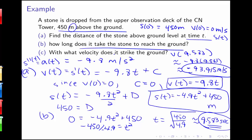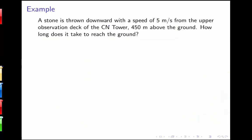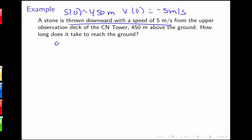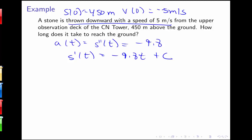When looking at these problems, we need to think about which of the three equations — position, velocity, or acceleration — to use to answer each question. In this next example, instead of being dropped, the stone is thrown downward with a speed of 5 meters per second, so the initial velocity is negative 5 meters per second rather than 0, while the initial height is still 450 meters. Starting with acceleration s double prime of t equals negative 9.8, we find s prime of t equals negative 9.8t plus c, and using s prime of 0 equals negative 5, c equals negative 5.